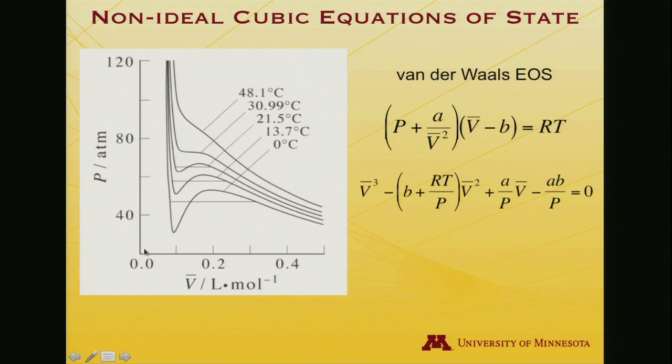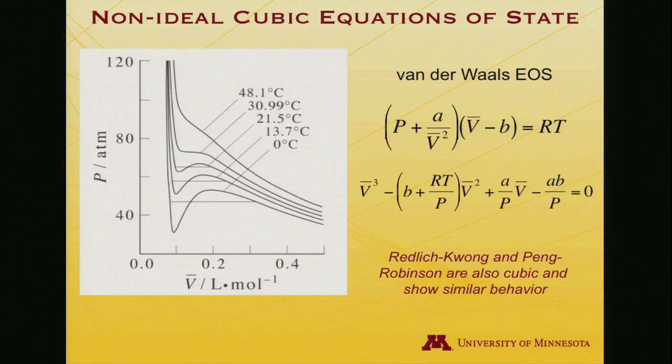We know what cubic equations look like. They can rise, dip, and rise again. Under certain circumstances, maybe there is a point of inflection. It's understandable why a cubic equation might be capable of reproducing this physical behavior. The Redlich-Kwong and Peng-Robinson can similarly be rewritten as cubic equations and show similar behavior in matching PV isotherms.